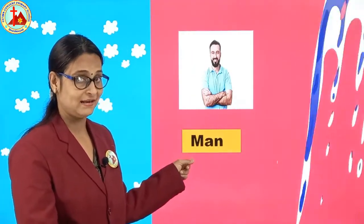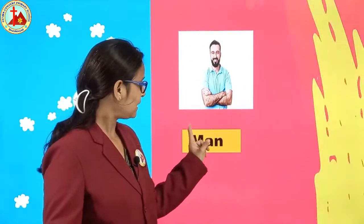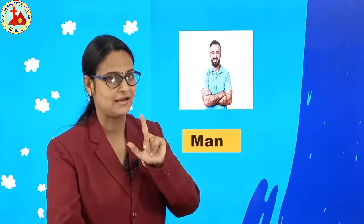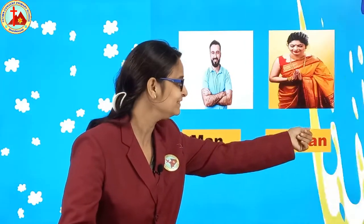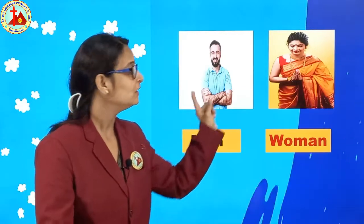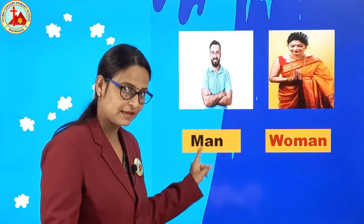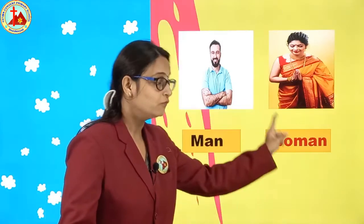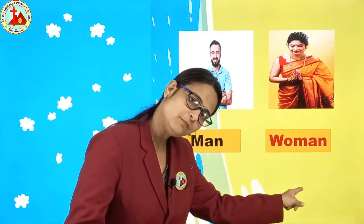This is the picture of a man. M-A-N. Man is masculine gender. So what about feminine? Woman. Man, woman. M-A-N — man. W-O-M-A-N — woman.